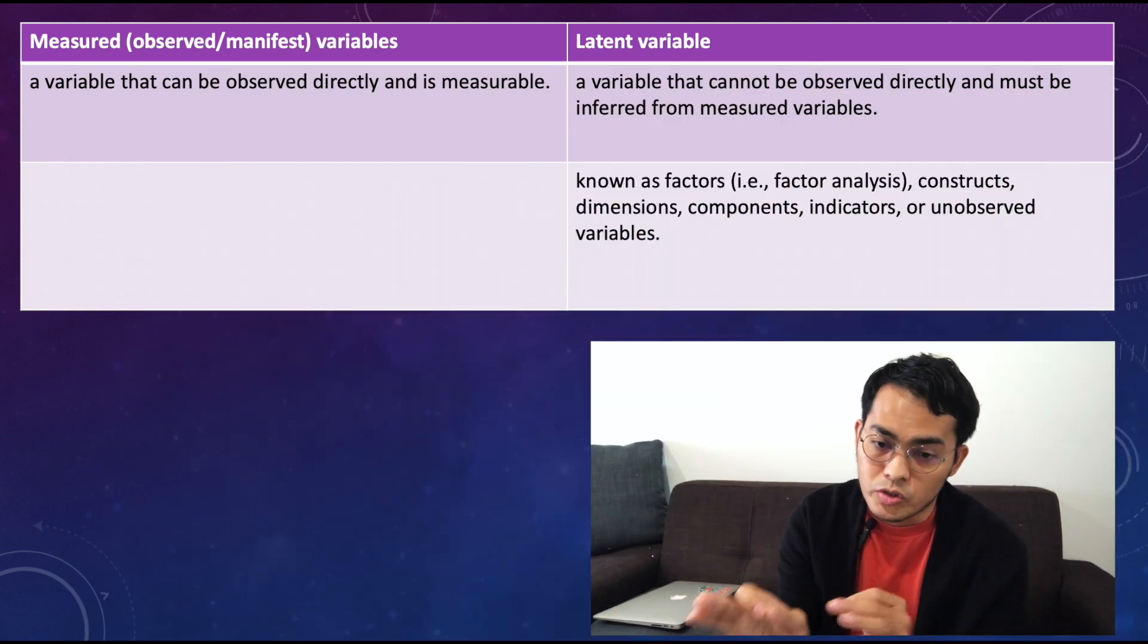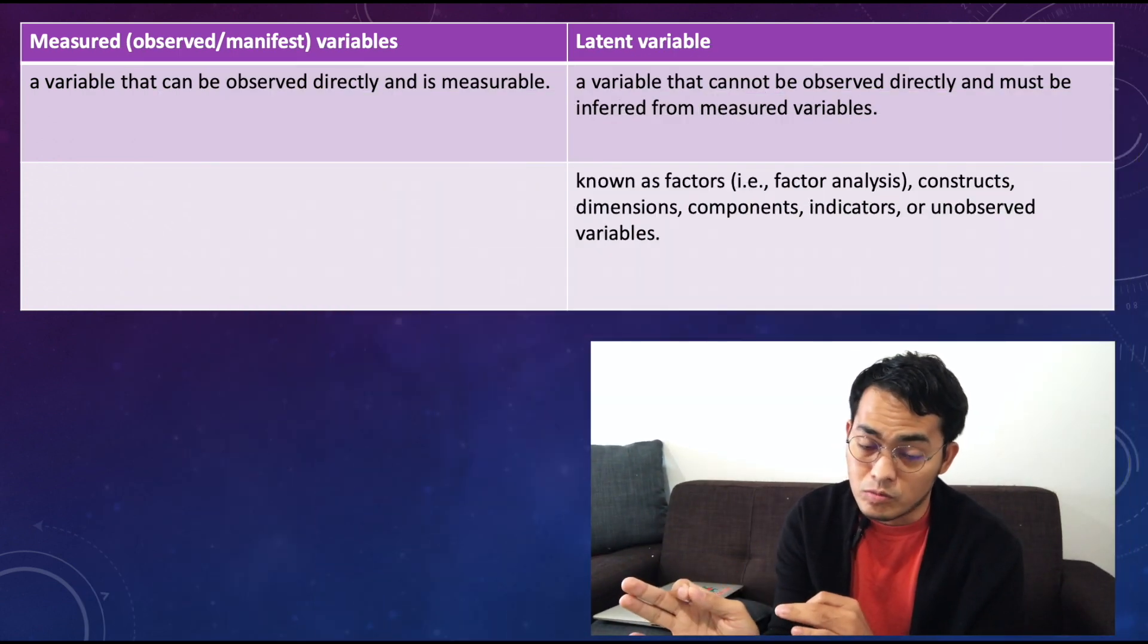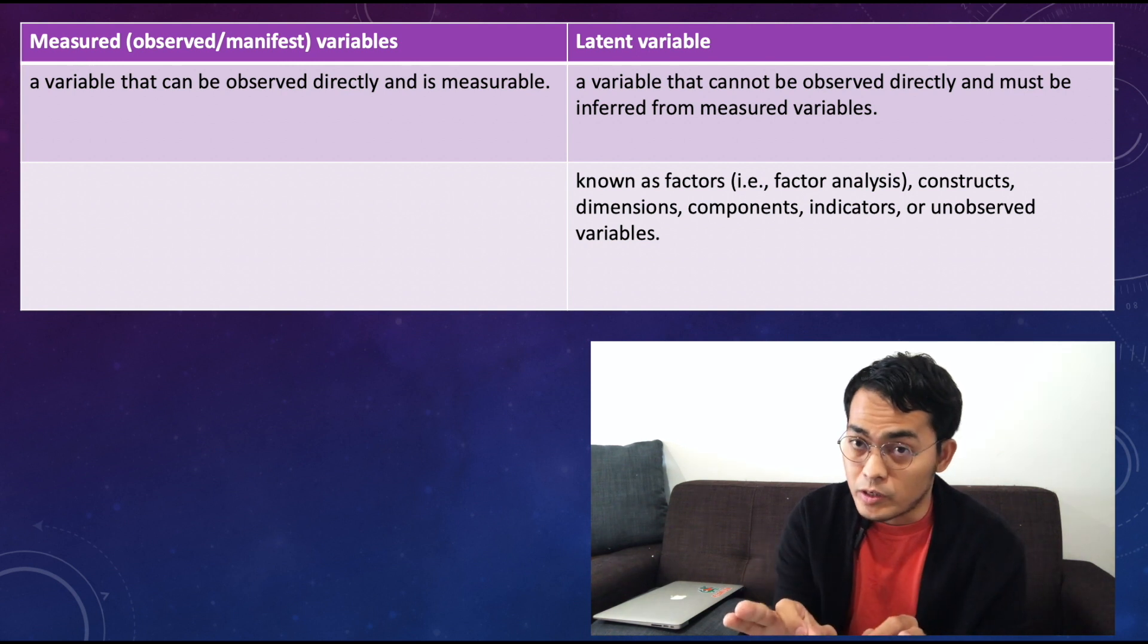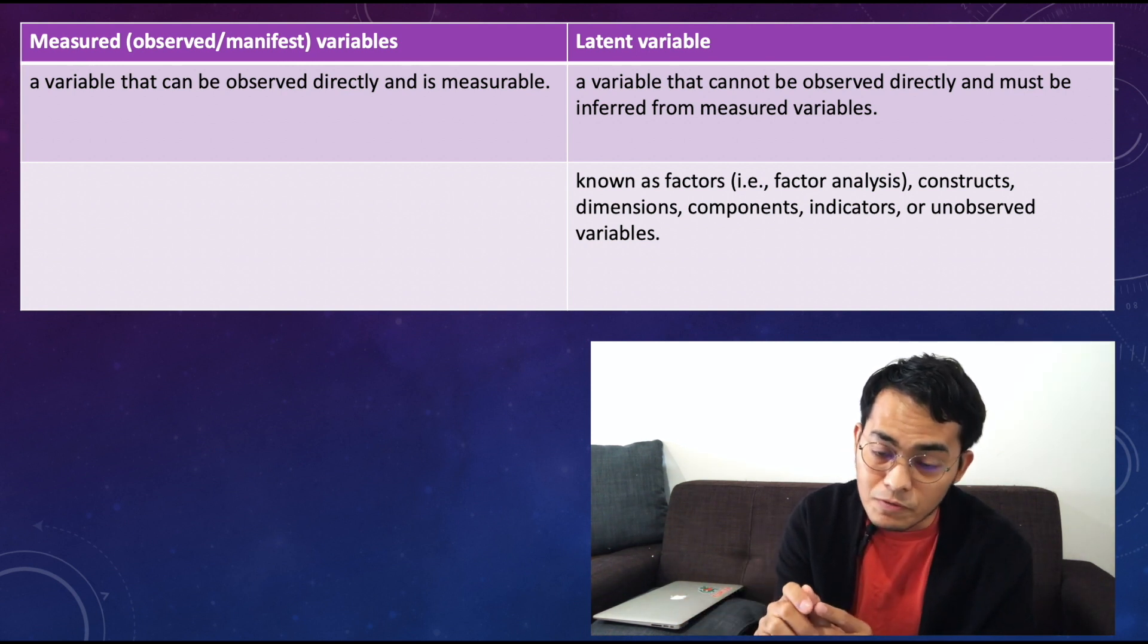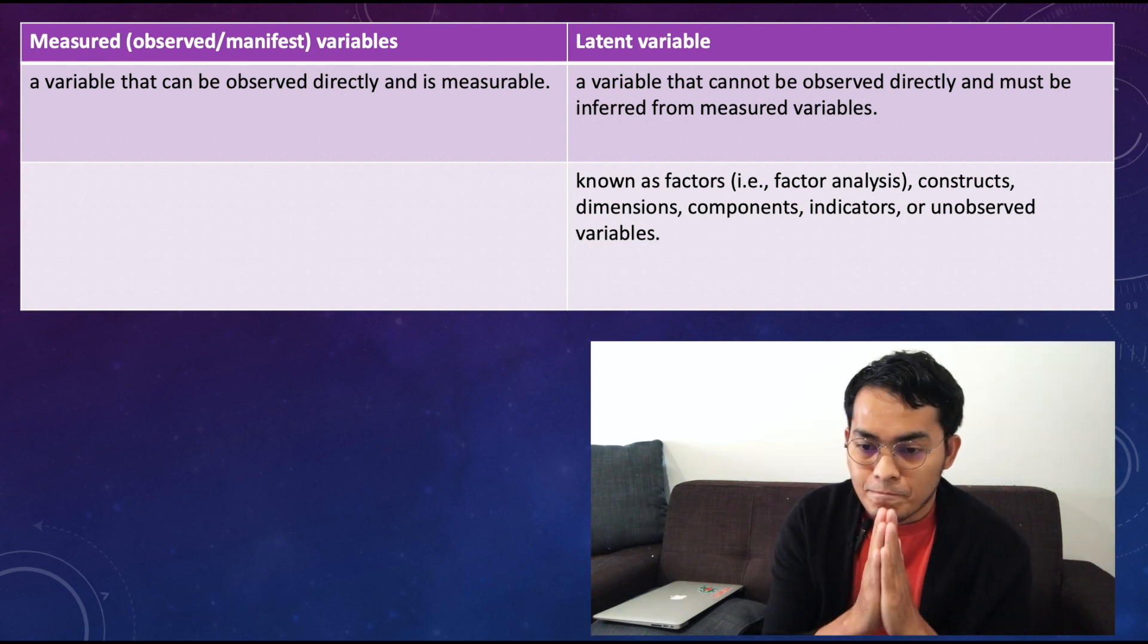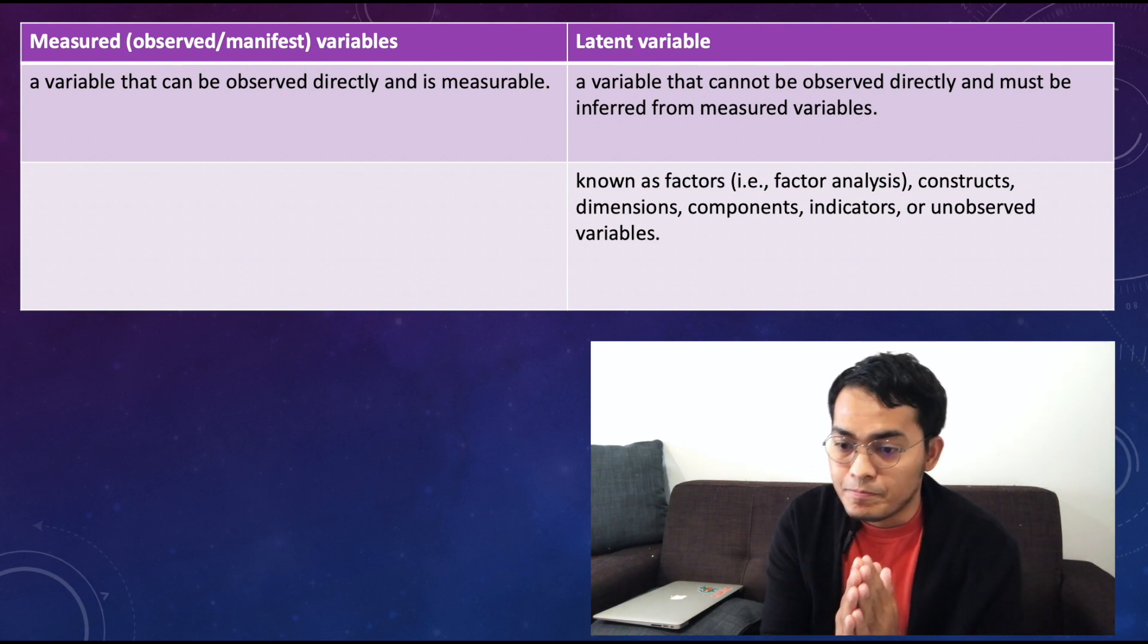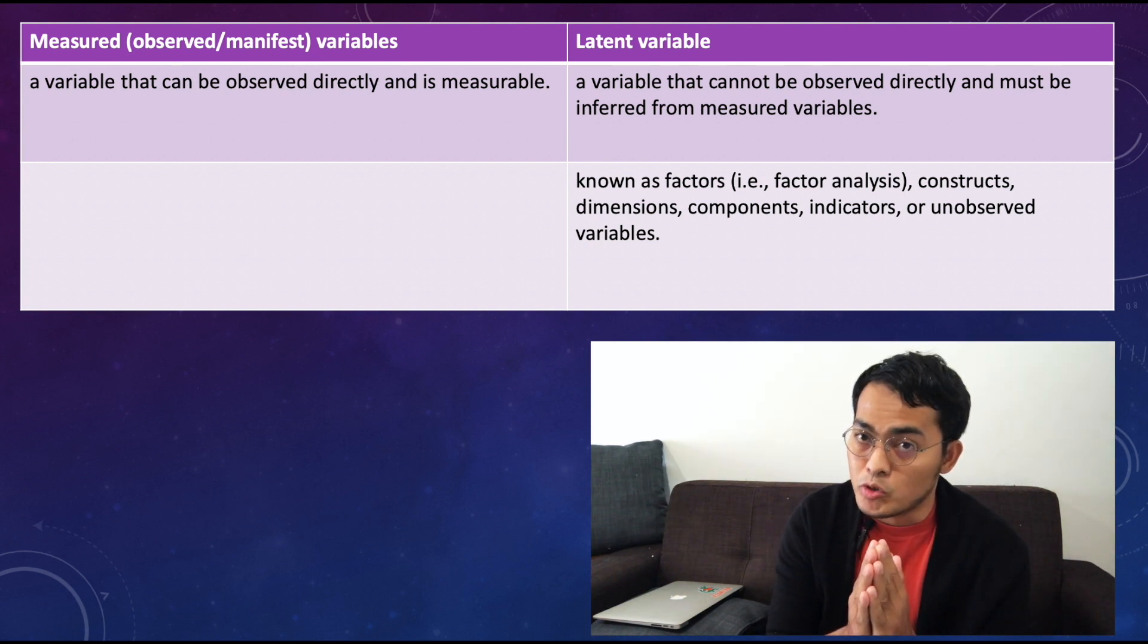The next slide is the difference between measured variables and latent variables. Measured variables, some people also call it observed variables or manifest variables - it is a variable that can be observed directly and is measurable. But latent variable is a variable that cannot be observed directly and must be inferred from measured variables.